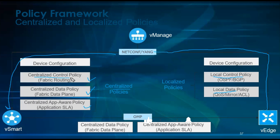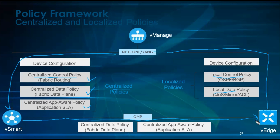Then there is a second type called centralized policy. Centralized policy is divided into three: centralized control policy, centralized data policy, and centralized app route policy. The centralized control policy configuration is seen on the vSmart. However, centralized data policy and centralized app route policy also sit on vSmart, but a copy is sent by vSmart using OMP to the vEdge. You have to be very careful when doing centralized policies as they affect global changes across the entire WAN.